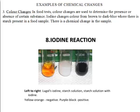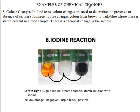Iodine is brown in color. Once it reacts with starch, we get a dark blue color as our result. So color changes also show examples of chemical changes — iodine reacted with starch and we got our blue color. If there is no color change, that means there is no starch. This is why we say chemical changes are usually not reversible.